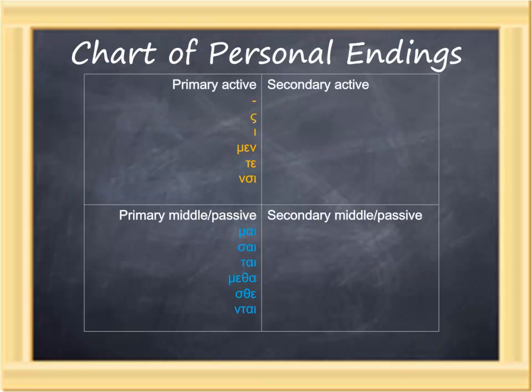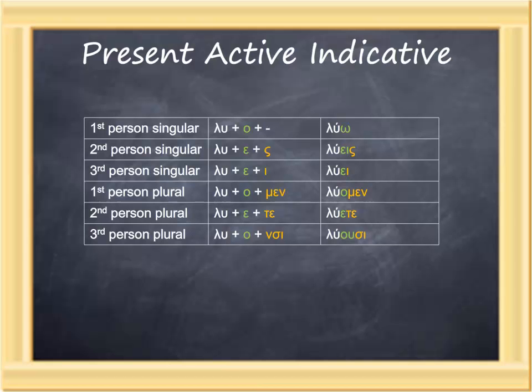The key for translating a Greek indicative verb is to notice the personal ending. Whereas English uses extra words to indicate person and number, it's all part of the Greek verb. For present and futures, the primary active or primary middle passive set of endings are used. The present active indicative is formed by combining the present stem, a connecting vowel—omicron or epsilon—plus the primary active endings, yielding: luo, lueis, luei, luomen, luete, luousi.